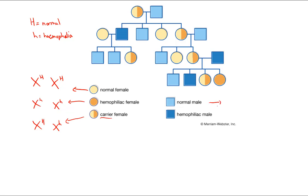For males, they are XY. A normal male will have a big H on his X chromosome, but because the Y chromosome is very small we put nothing there — or a dash to show there's no corresponding gene. A haemophiliac male will be X^h Y, with a dash on the Y.